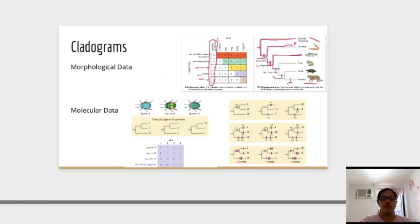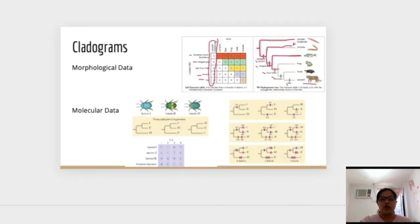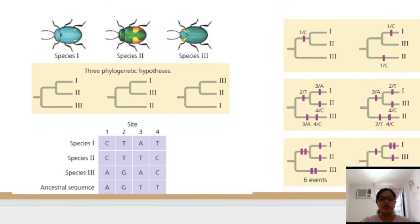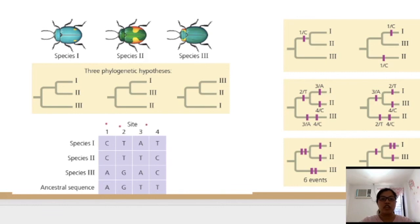Now let's go to molecular data. When using molecular data, the character is the site on the DNA — for example, site 1, site 2, site 3, and site 4. The character states are the nucleotide bases: A, T, C, and G.